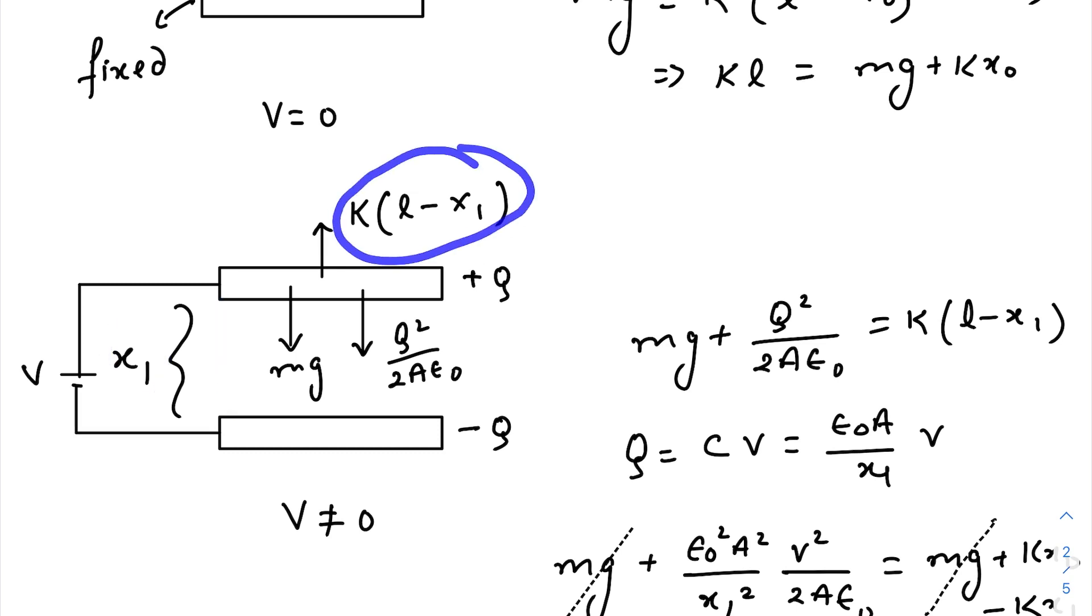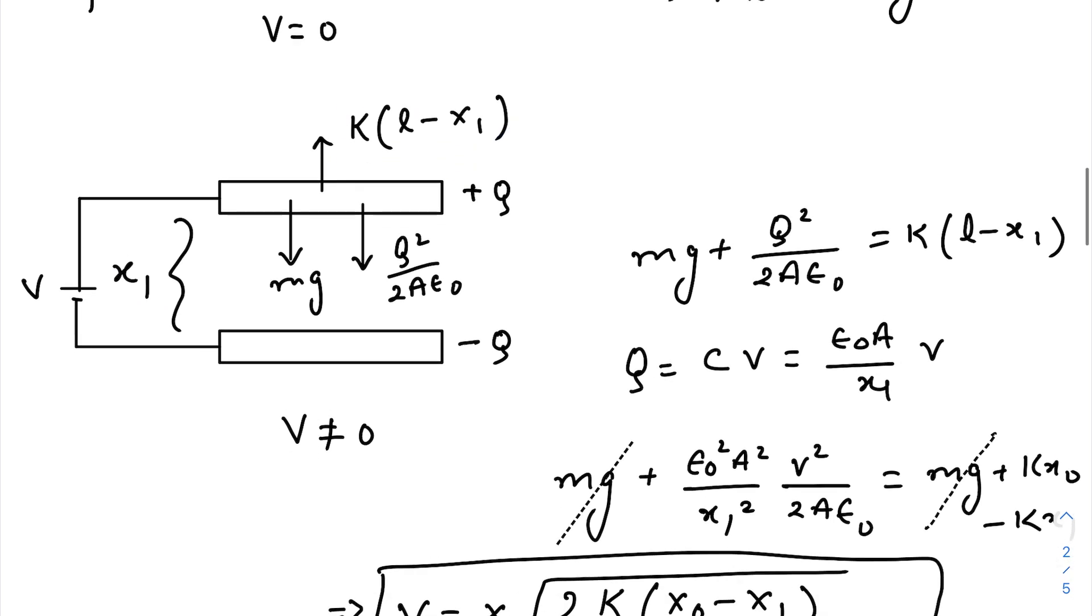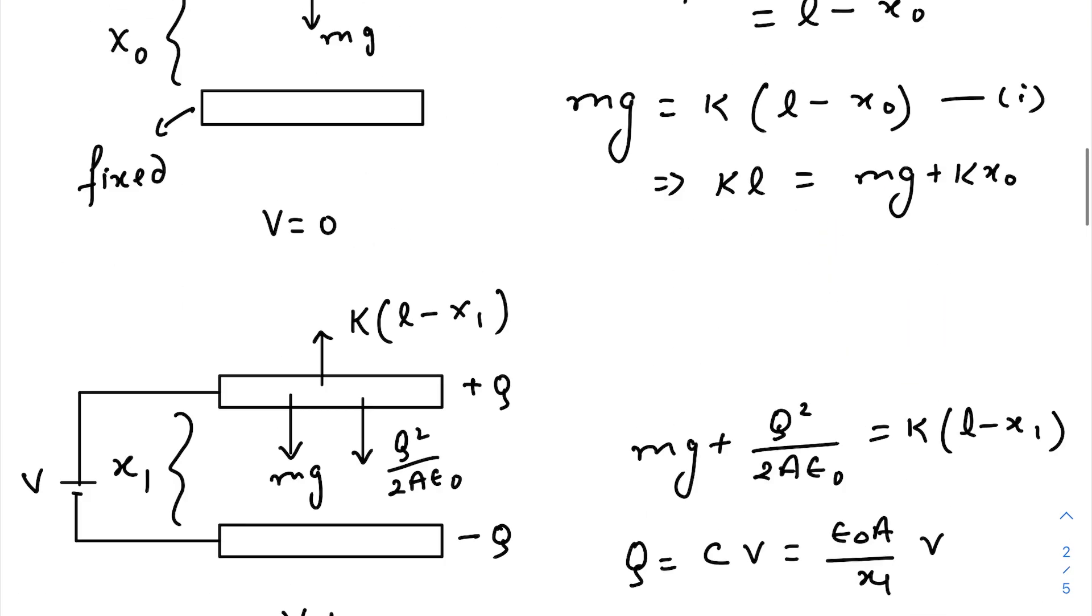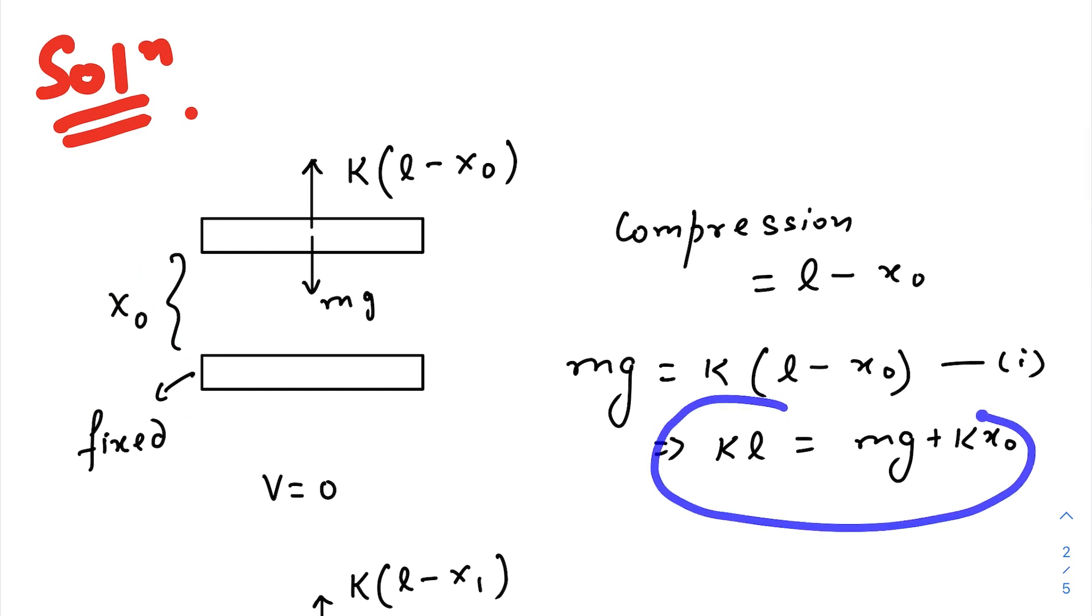Now the new distance between the two plates is x1, so the compression of the spring is now l minus x1. So in equilibrium condition, we can write that the downward force equals the upward force. Now q equals CV, C is epsilon naught A divided by distance between the two plates times V.